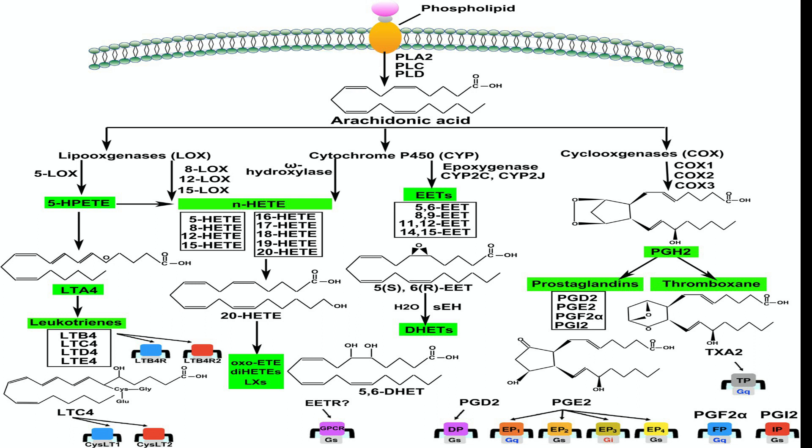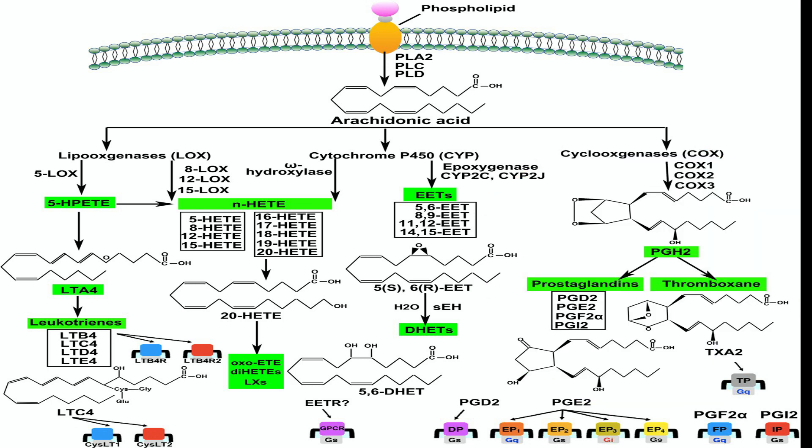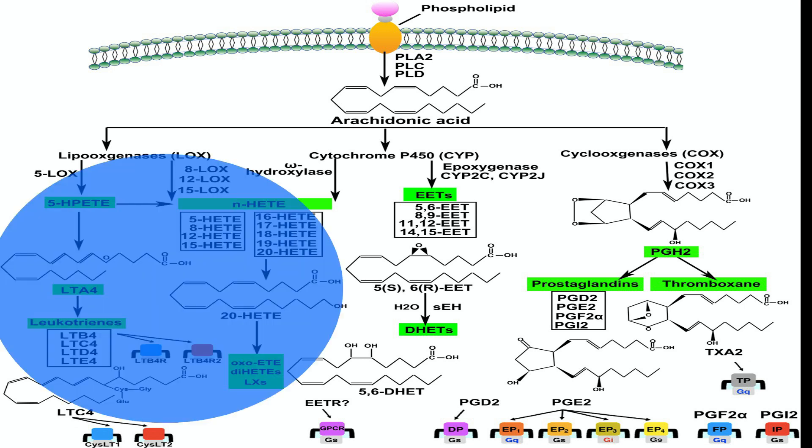The cyclooxygenase pathway leads to the formation of prostaglandins, prostacyclins, and thromboxanes. These molecules are involved in several physiological processes, including inflammation, platelet aggregation, and vasodilation.